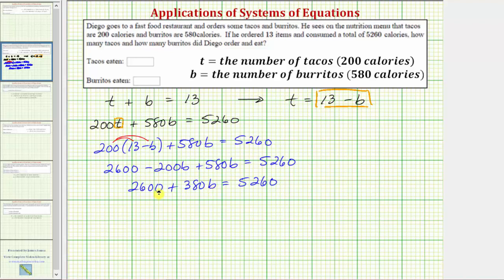Next step we subtract to isolate the b term, so we subtract 2,600 on both sides. Simplifying, we have 380b equals 5,260 minus 2,600 which is equal to 2,660.